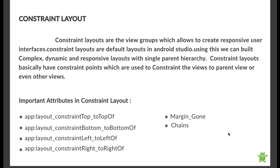The chain attribute is used when we need to spread views equally, either horizontally or vertically. For example, if we have three buttons that need to be spread equally in a row horizontally, we use a horizontal chain. If we need to align three buttons vertically with equal spacing, we use a vertical chain.